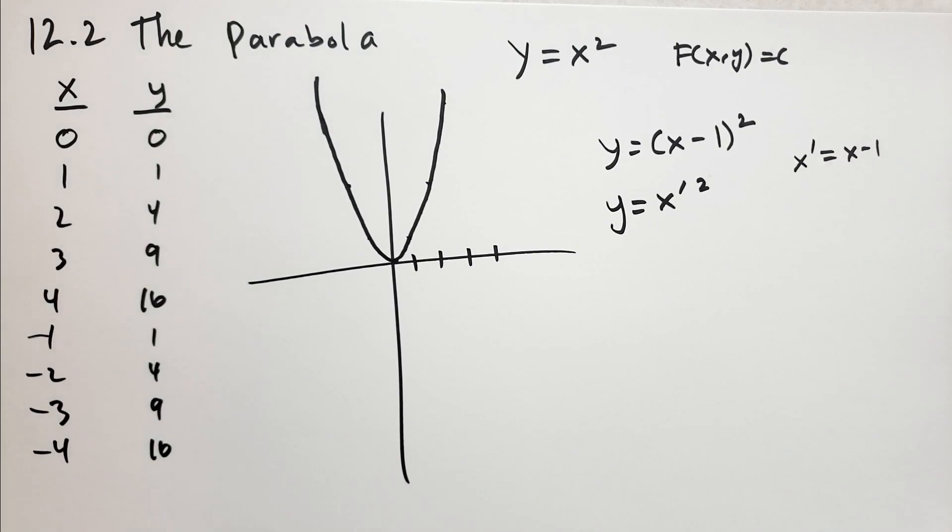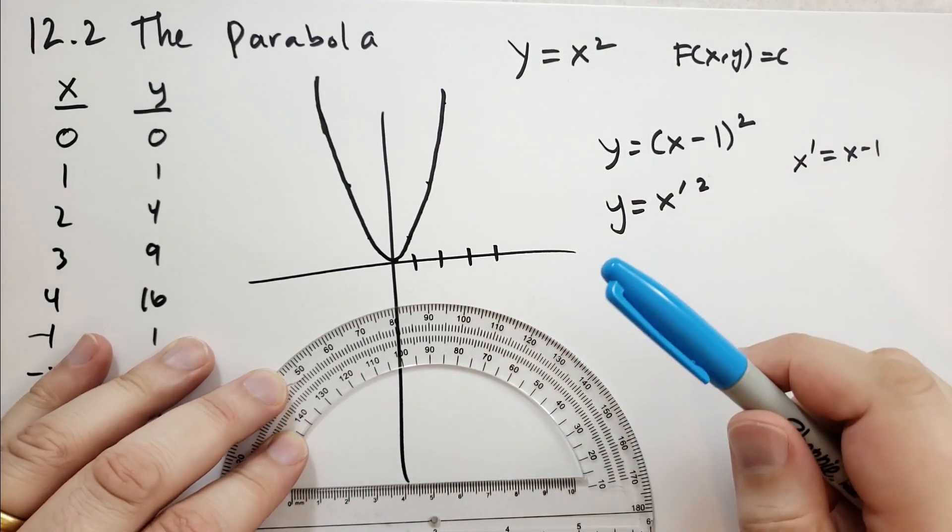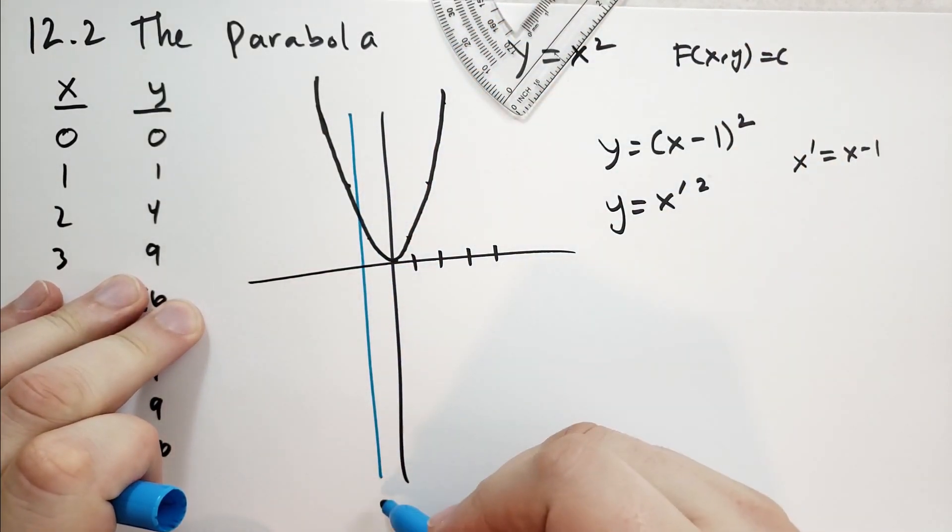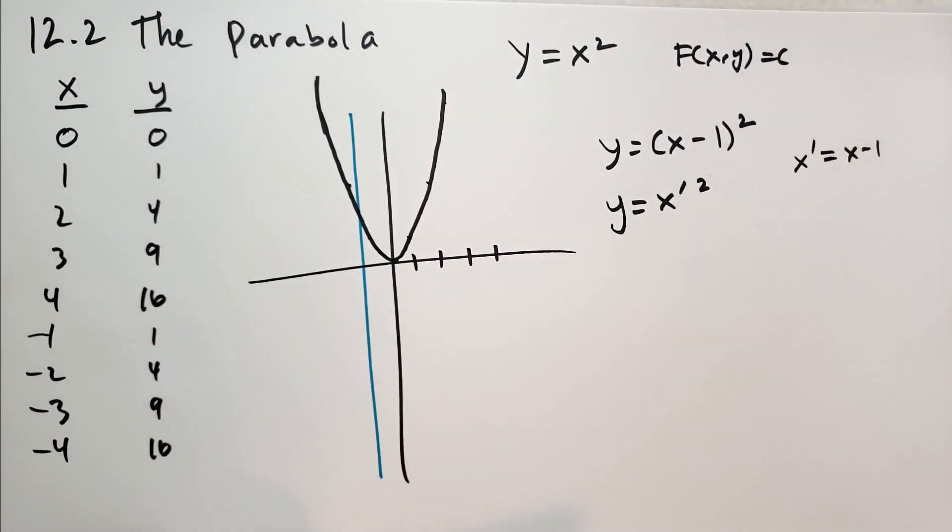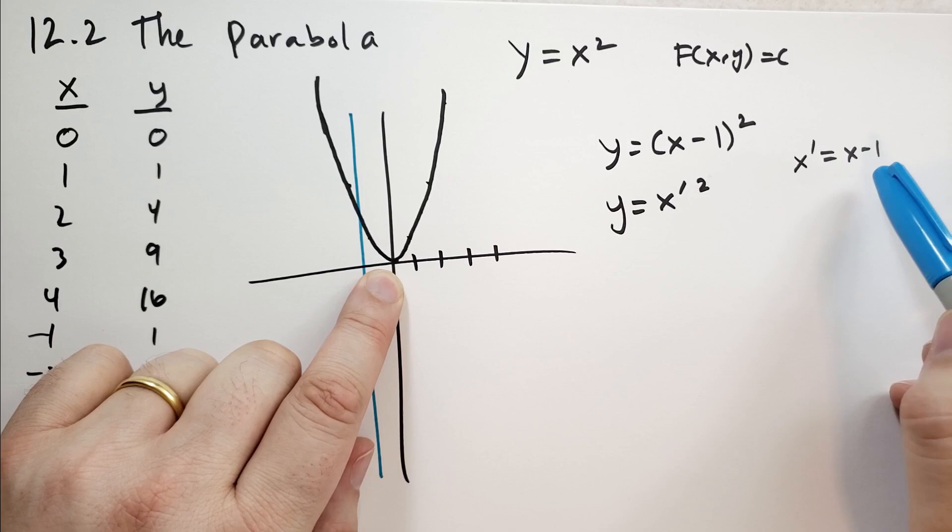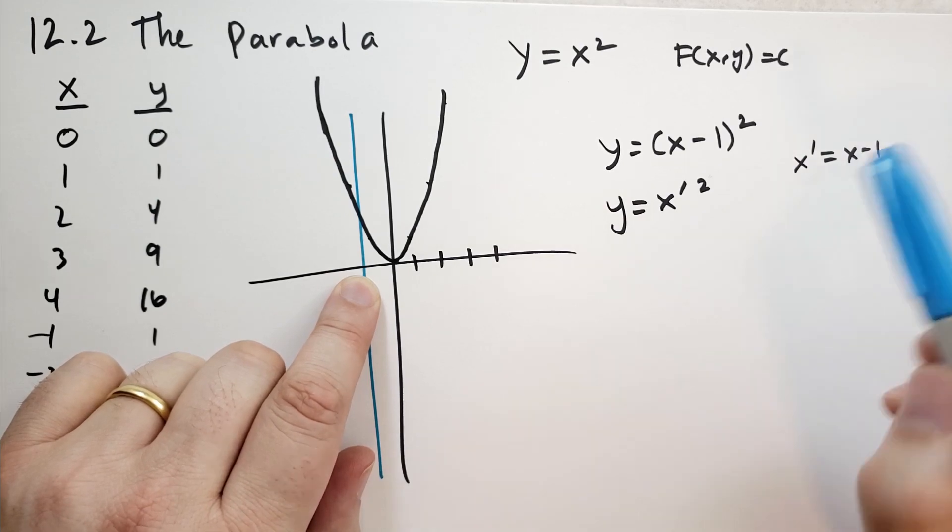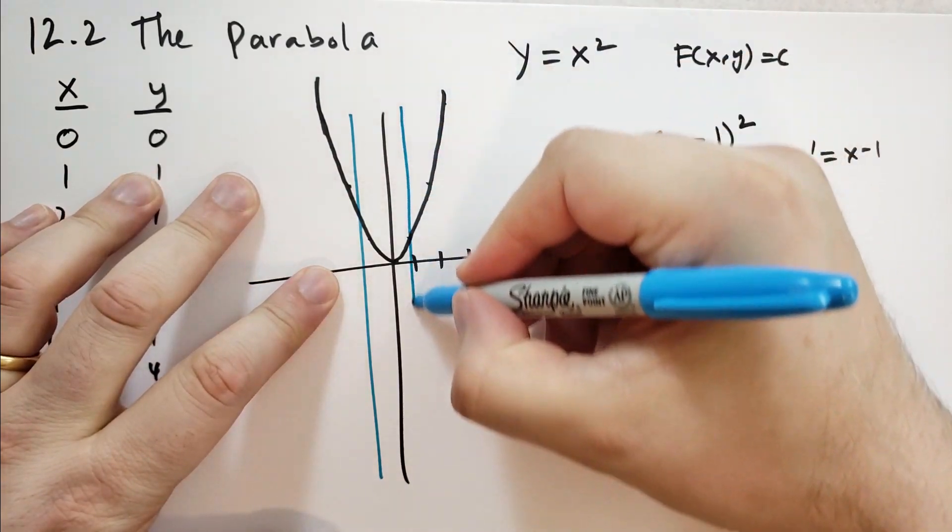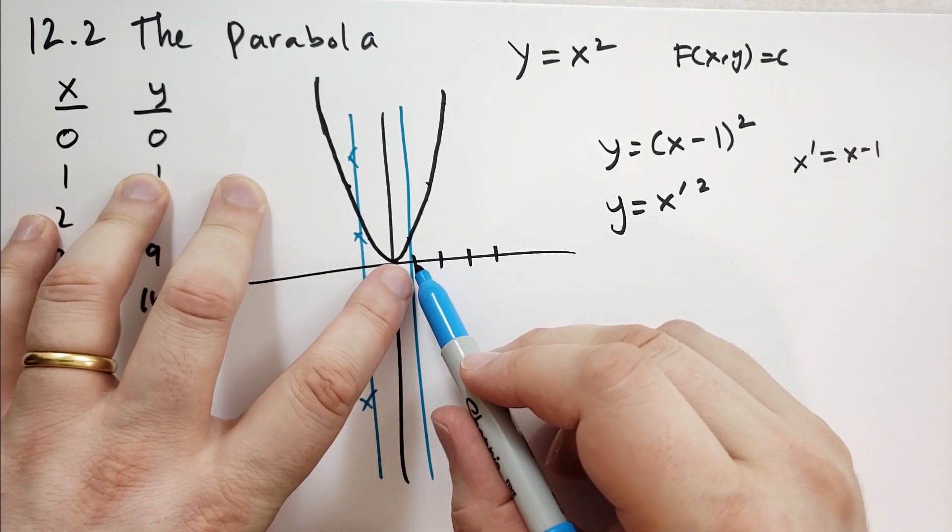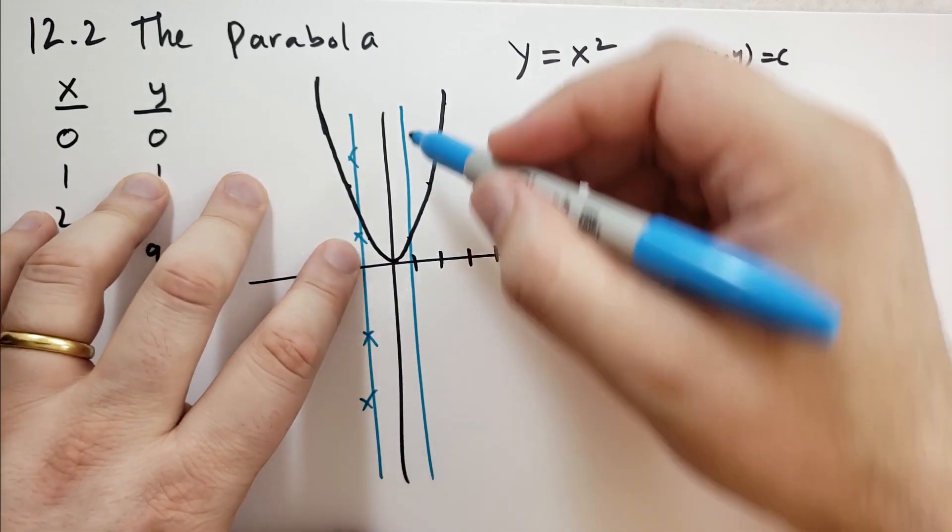So let's draw what the x prime axis looks like. In x prime land, when x prime is 0, what does x have to be? x has to be 1. Let me move it over this way. See, this is why you have to be careful. When x prime is 0, then x is 1. When x prime is 1, then x is 2. And when x prime is minus 1, x is 0. So this is where the x prime axis starts.